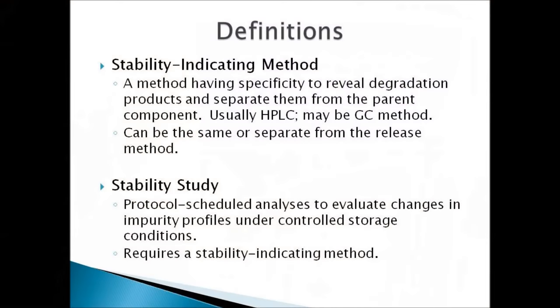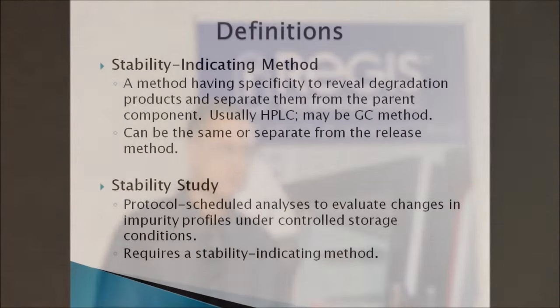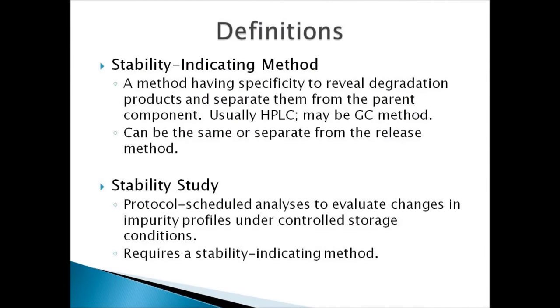Degradation products are impurities that are formed due to applied stress, or what are seen in real-time storage. Sometimes the term 'degradant' is used for degradation products. A stability-indicating method is a method having the specificity to reveal degradation products and separate them from the parent component — usually done by HPLC, but also by GC or even thin layer chromatography. This can be the same or separate from the release method. A stability study is a protocol-scheduled set of analyses to evaluate changes in impurity profiles under controlled storage conditions, and it requires a stability-indicating method. So you need forced degradation to get to the stability-indicating method in order to do stability studies.